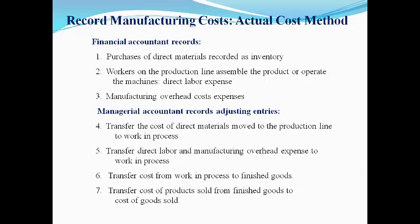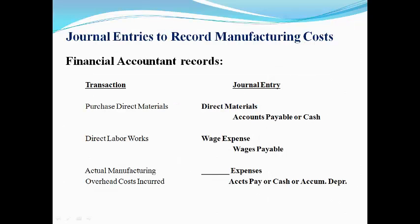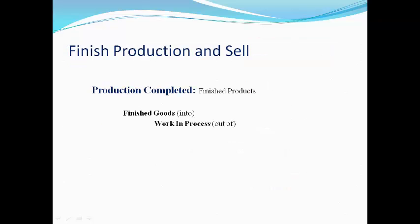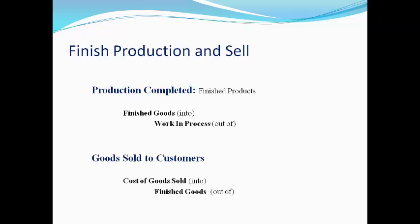These costs are then moved to finished goods when the product is completed, and then on to cost of goods sold when the products are sold. The financial accountant records direct materials purchased to an inventory account; direct labor is recorded as an expense, and manufacturing overhead costs incurred are also recorded as an expense. The managerial or cost accountant makes adjusting entries at the end of the period to move product costs to work in process so they are not expensed in the period incurred — this follows the matching principle. The amount of the journal entry is always the actual cost.